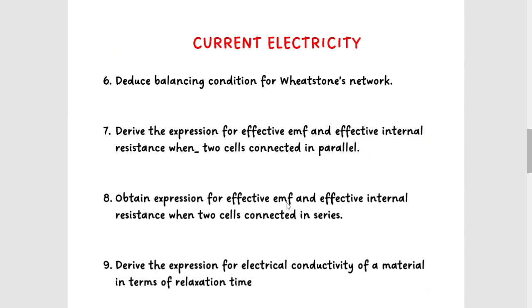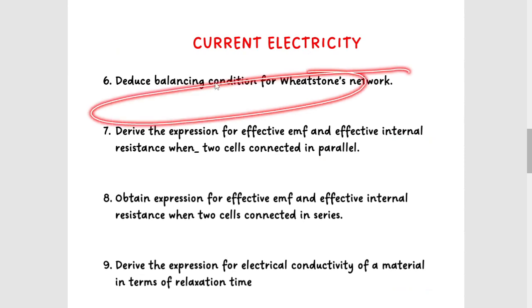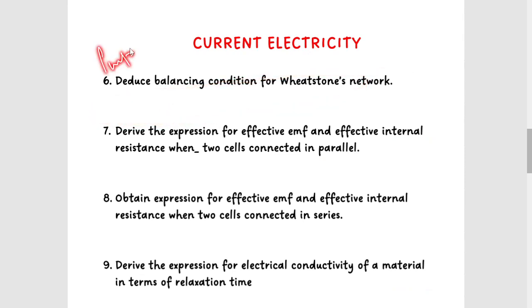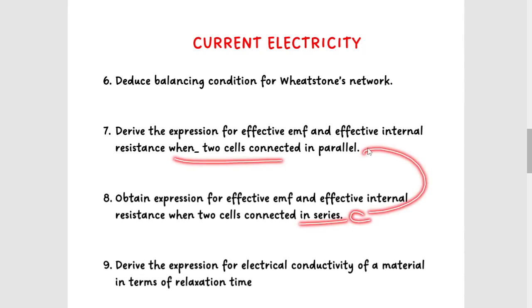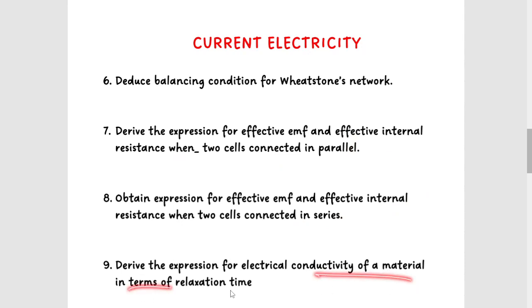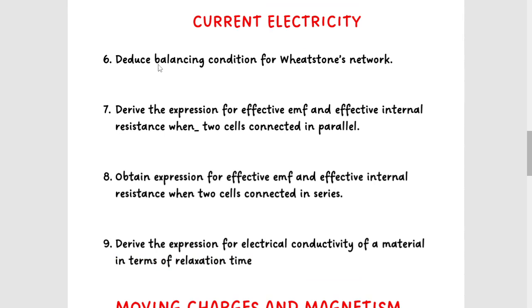Coming to current electricity, the most important derivation is the balancing condition for the Wheatstone Bridge. Next is the expression for effective EMF and effective internal resistance when two cells are connected in parallel and series. And last, the expression for electrical conductivity of a material in terms of relaxation time. These four derivations are important for current electricity.